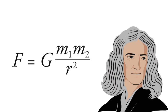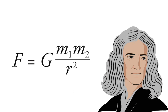Where F is the force, M1 and M2 are the masses of the objects interacting, r is the distance between the centers of the masses, and G is the gravitational constant.